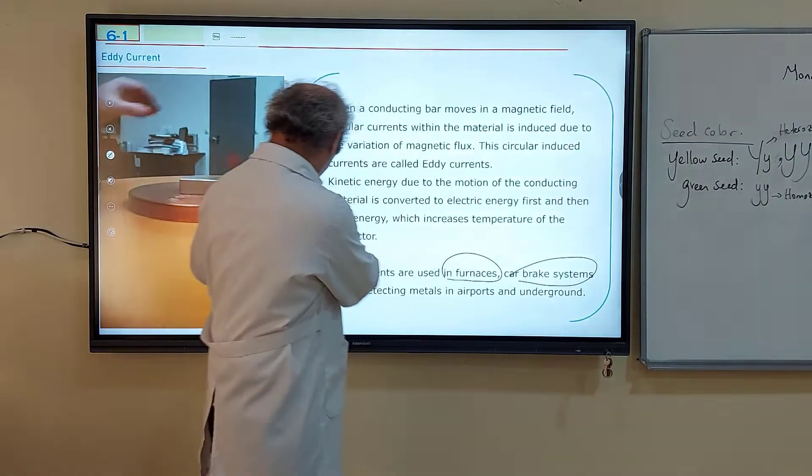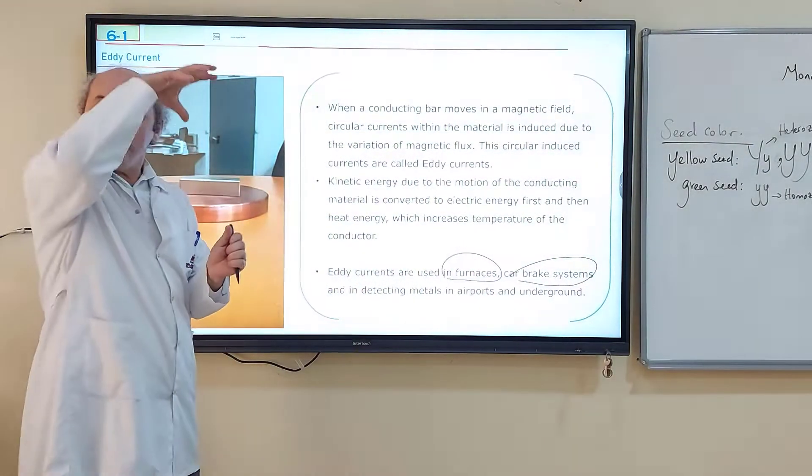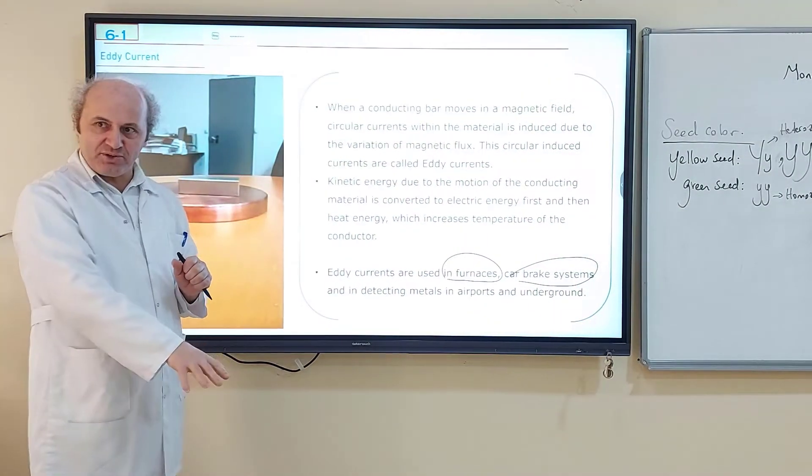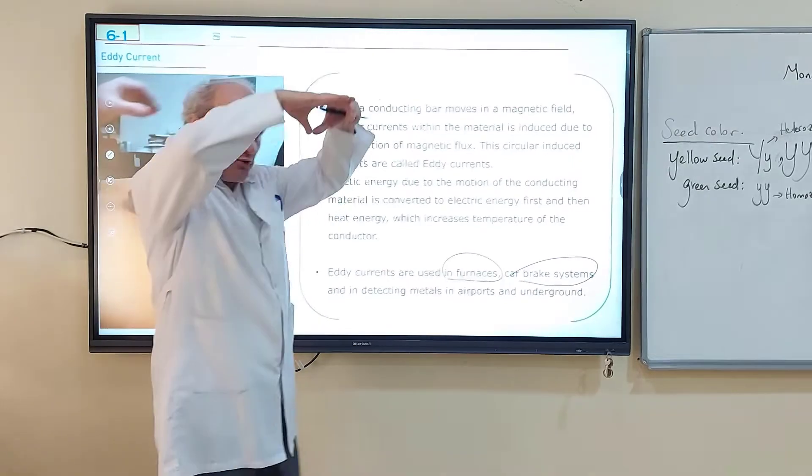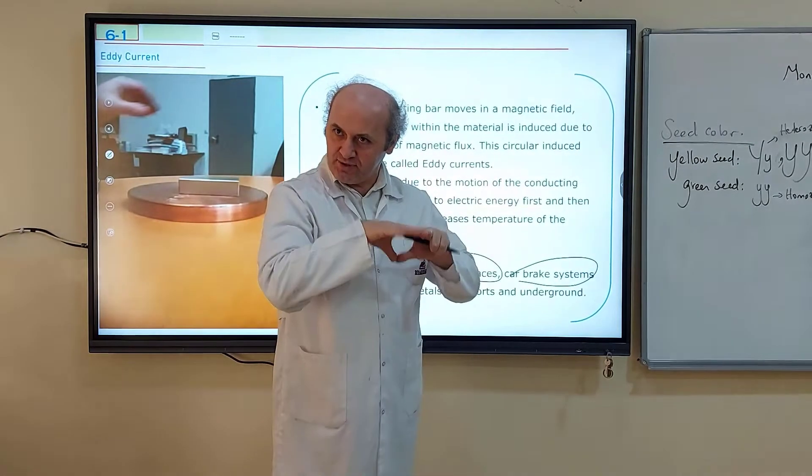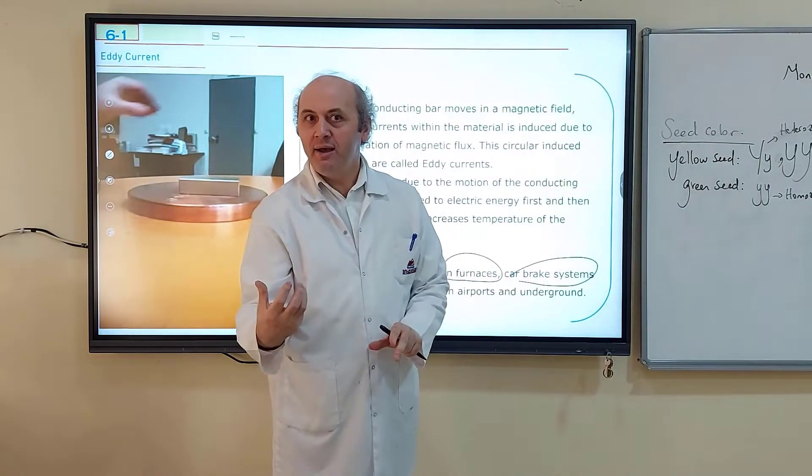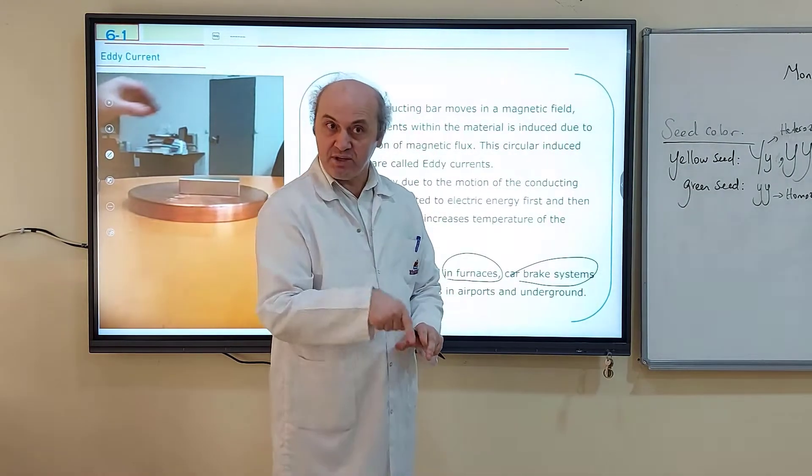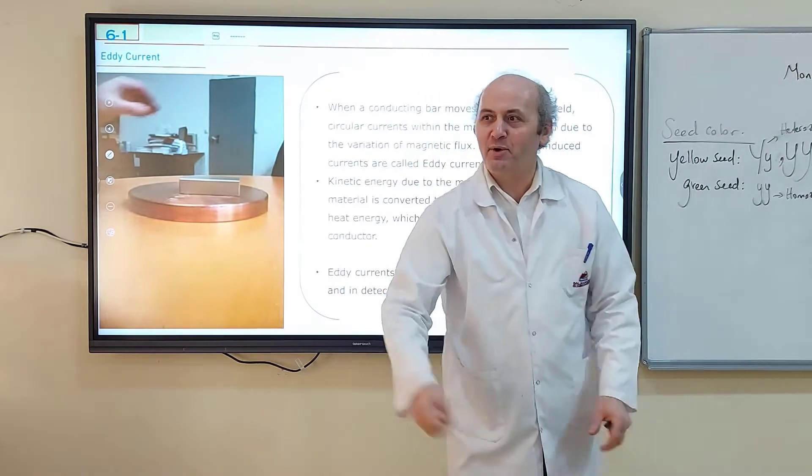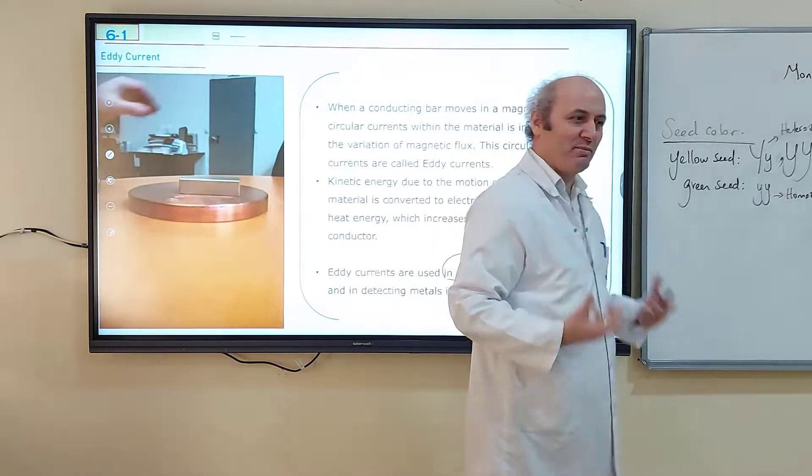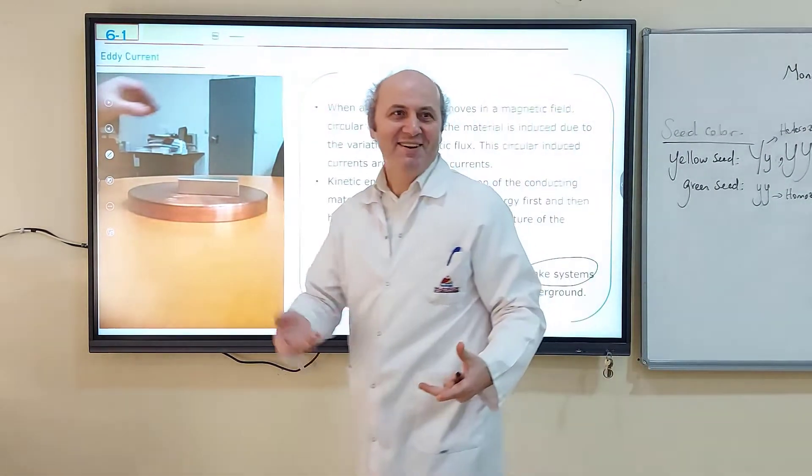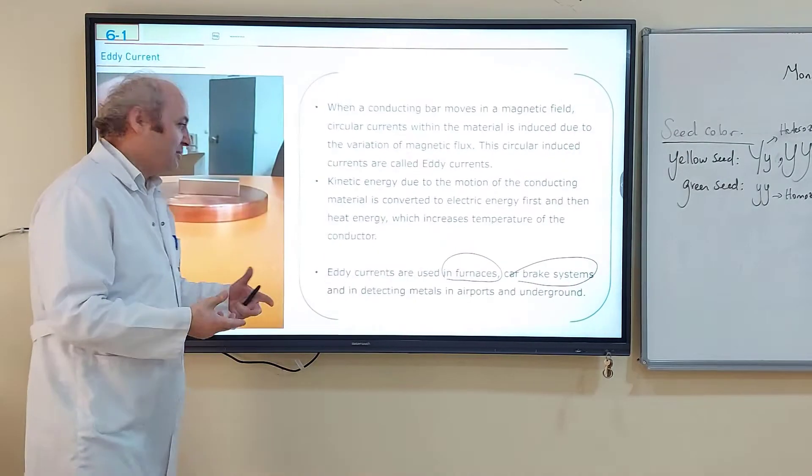And also, detect metals in airports and underground for searching the treasures. You are going to use an electromagnet because when magnet is approaching, say that underground there is gold. Then you drop a magnet towards that gold, there will be current in the gold. This current produces a magnetic field. When you take the magnetic field, oh my god, here is gold. Then you are going to dig in here and you are going to be the richest person on the earth. This is how they are used.